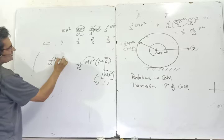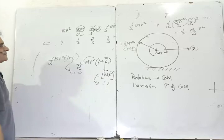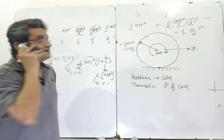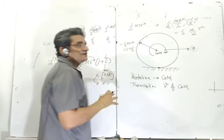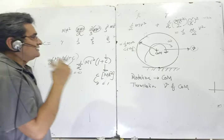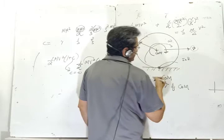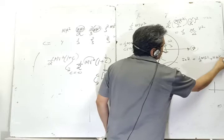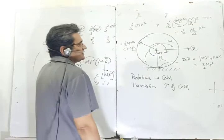Now, suppose we take the moment of inertia about the point of contact — the instantaneous axis of rotation. The whole body rotates about this axis with the same omega; omega does not change with the change in axis. Using the parallel axis theorem, the moment of inertia about this point is ½mr² (about the center of mass) plus mr² (parallel axis term), giving (3/2)mr².